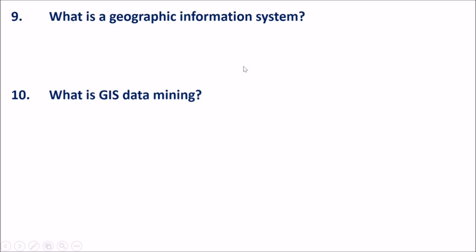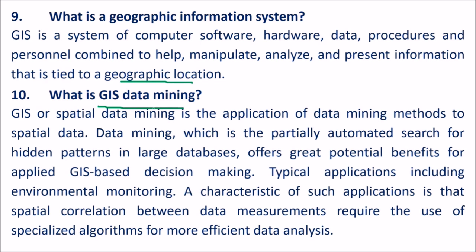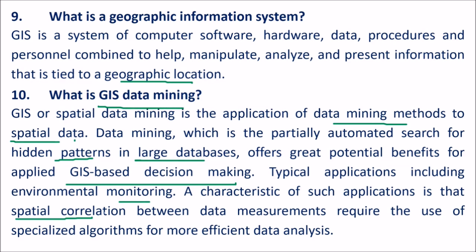What is a geographic information system? GIS is a system of computer hardware, software, data, procedures, and personnel combined to help manipulate, analyze and present information tied to a geographic location. GIS or spatial data mining is the application of data mining methods to spatial data — a partially automated search for hidden patterns in large databases. It offers great potential benefit for GIS-based decision making, including environmental monitoring, where spatial correlation between data measurements requires specialized algorithms for efficient analysis.